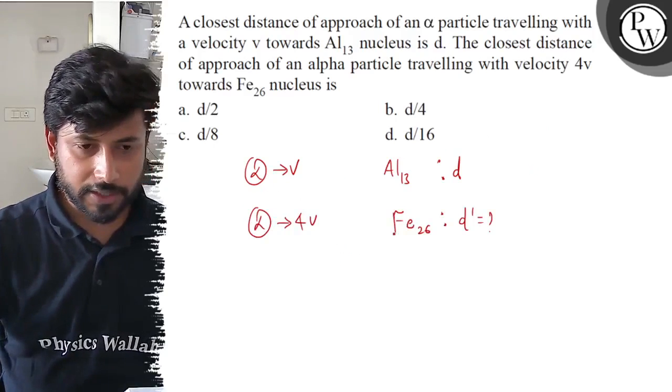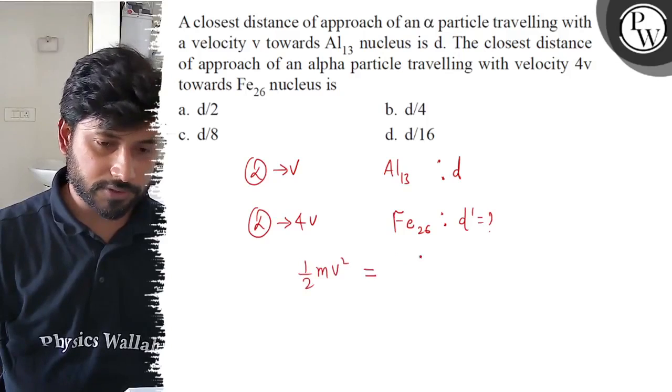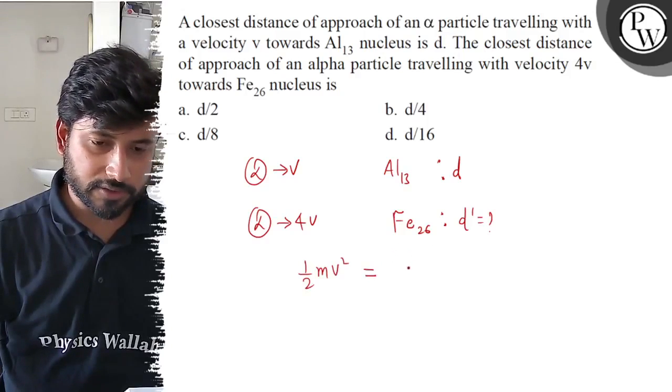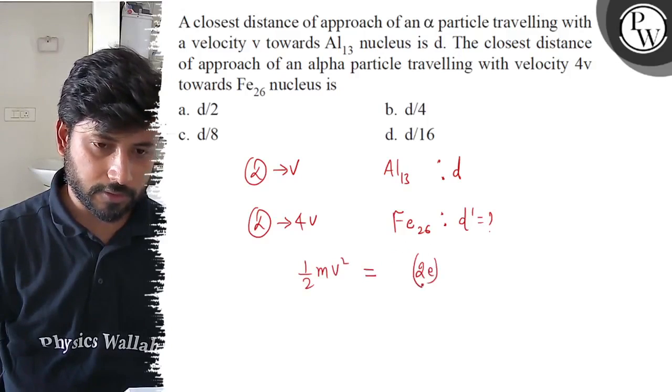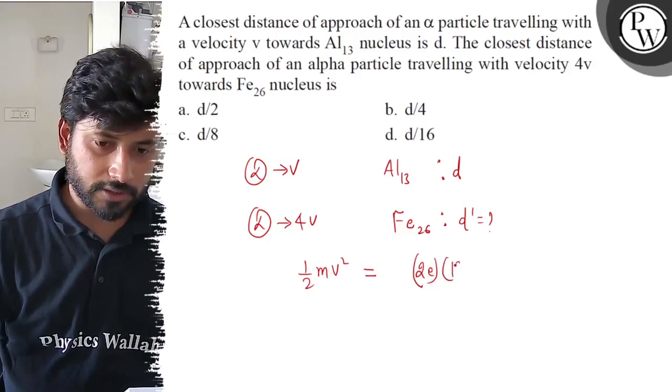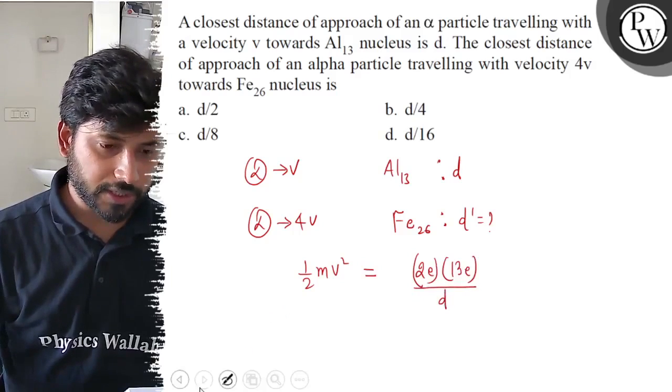Initially, the kinetic energy is ½mV². The distance of closest approach occurs when this equals the potential energy: Q₁Q₂/(4πε₀D), where Q₁ is 2e and Q₂ is 13e, giving us (2e)(13e)/(4πε₀D).